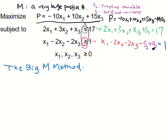The new non-negative restrictions are x1, x2, x3, the slack variable s1, the surplus variable s2, and the artificial variable a1 — they all need to be non-negative. The highlighted part is the modified problem.